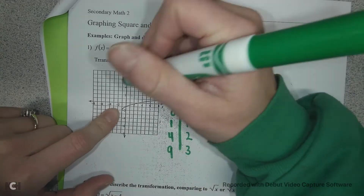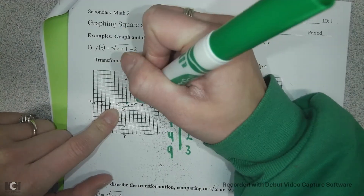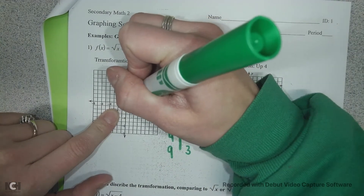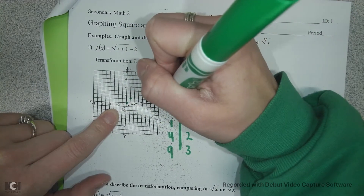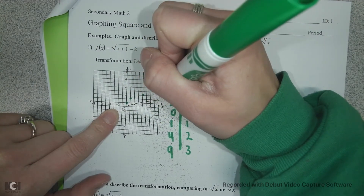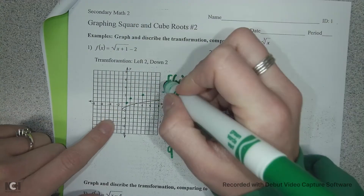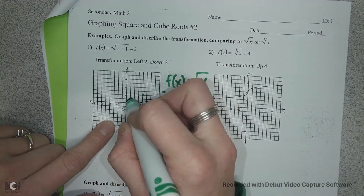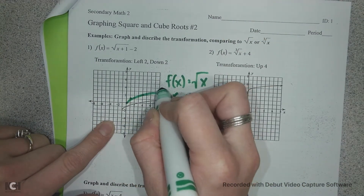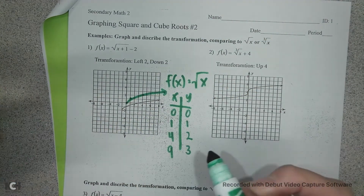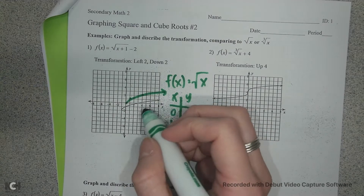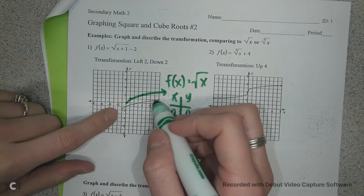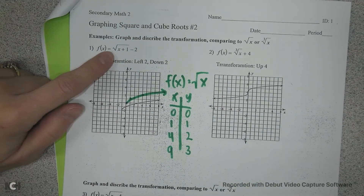Then we graph these. We've got a dot at (0, 0), (1, 1), (4, 2), and (9, 3). So then we connect them. The parent function is our green, and then our new function is this one. This is the equation.